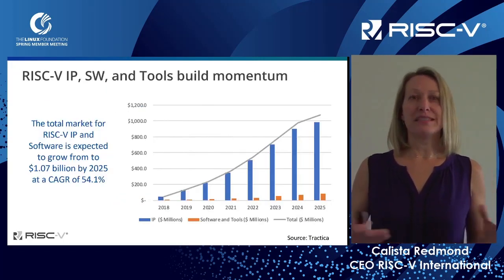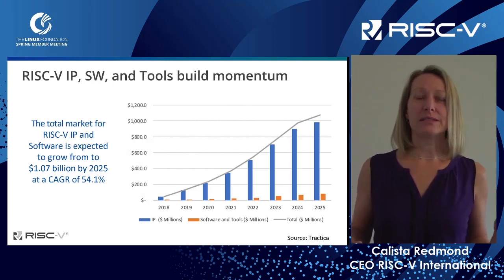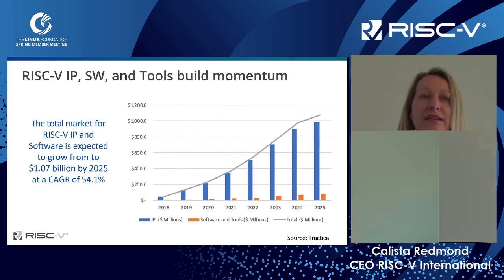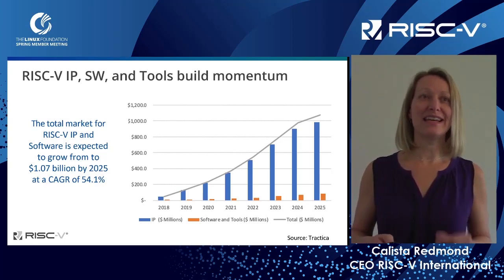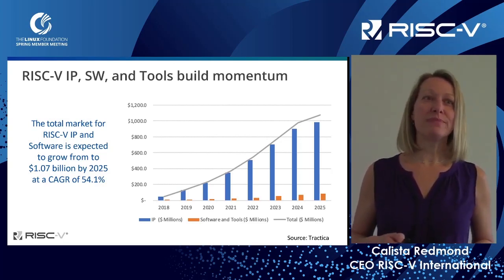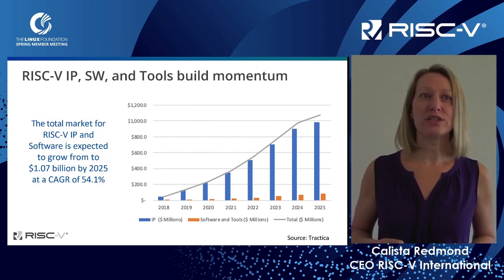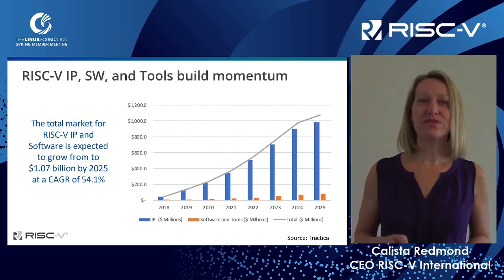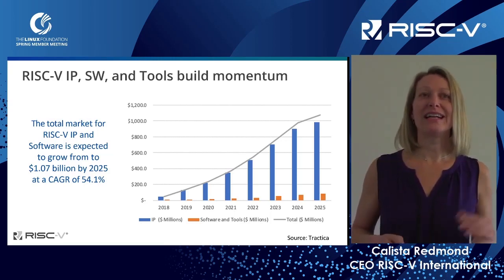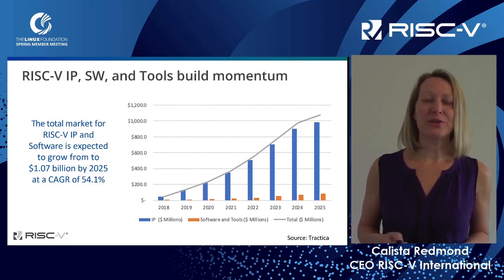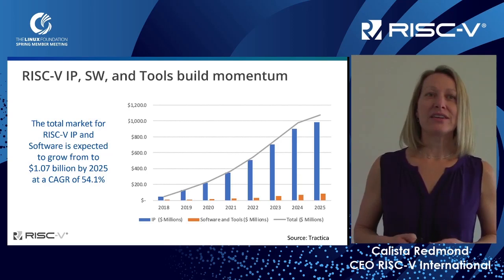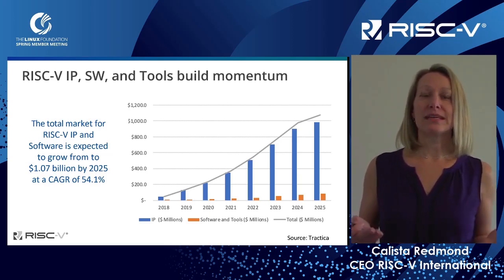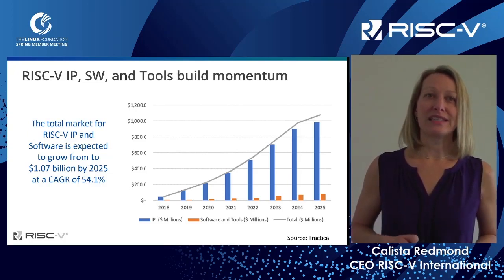This starts to bleed into other aspects of the ecosystem. RISC-V IP — there are more design houses with RISC-V today than any other. This market is growing to over 1 billion by 2025. And this is a CAGR of 54.1%. Again, these graphs are all going in the same direction. This starts to have a carry-on effect in the software and tools ecosystem. So not only is IP growing, but the ecosystem around it is as well.